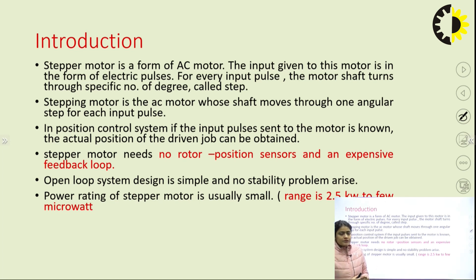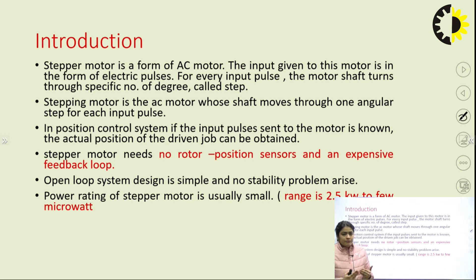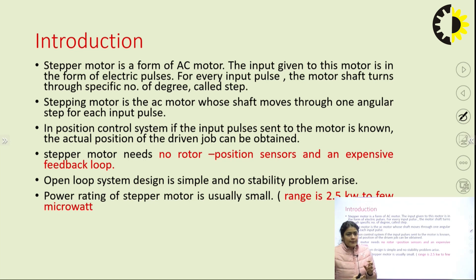Basically, we give input pulses and according to those input pulses the motor rotates in steps. If the number of steps is more, the precision and the resolution of the motor will be high. By reducing the step angle we can increase the precision or resolution. That is why the stepper motor is more useful for position control — wherever very precise position control is required, we use the stepper motor because it measures position in terms of steps.